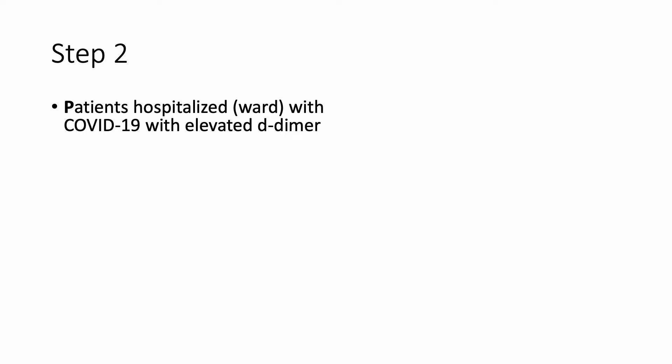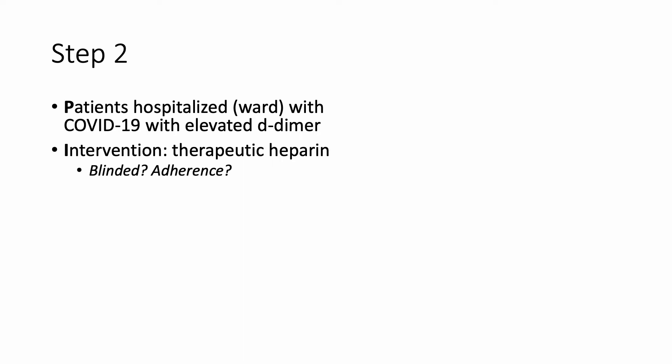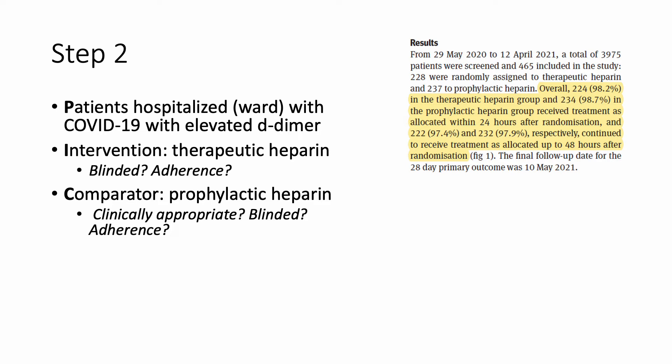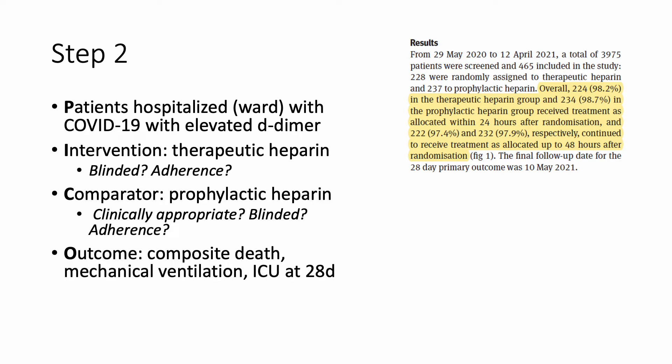After understanding the population, the next step is the intervention. In this case, it was therapeutic heparin. Key questions: was it blinded, and how was the adherence? The comparator group was prophylactic heparin — it's really important to ask whether that's clinically appropriate, whether it was blinded, and what the adherence was. This was an unblinded randomized trial, but adherence was excellent at about 98% in both groups. Prophylactic heparin is absolutely a clinically appropriate comparator for anyone who has cared for patients with COVID-19.